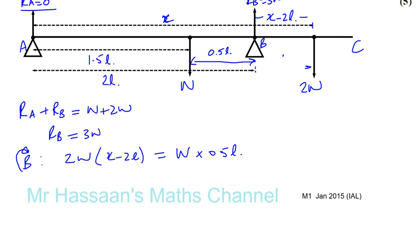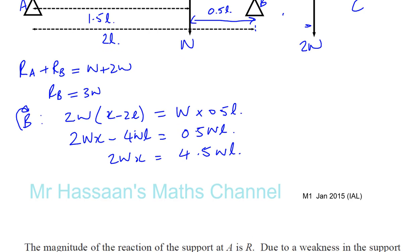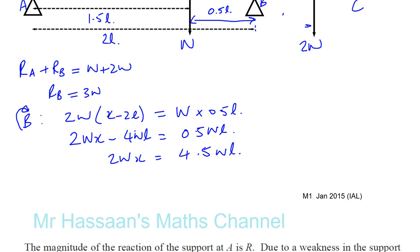Okay, let me move this stuff down. It's going to be in terms of W, of course, and L. So, we've got 2WX minus 4WL equals 0.5WL. So, we have 2WX is equal to 4.5 times WL. So, we can just divide both sides by 2W. So, we end up with X equals 4.5 WL over 2W. Of course, the W's will cancel and you end up with 2.25L. That's the value of X. 2.25L.